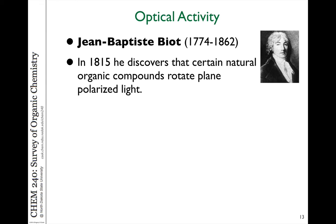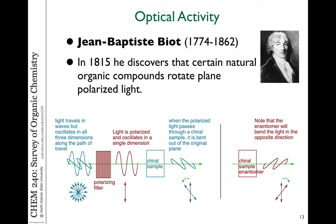Mirror image isomers will rotate plane polarized light the same amount but in different directions. This is an intrinsic property of chiral molecules. One mirror image isomer might rotate the plane of polarized light to the left a certain number of degrees, and the opposite mirror image isomer will rotate it to the right the same number of degrees. That is the only physical difference between enantiomers — the direction in which they rotate plane polarized light. This is what we refer to as optical activity.